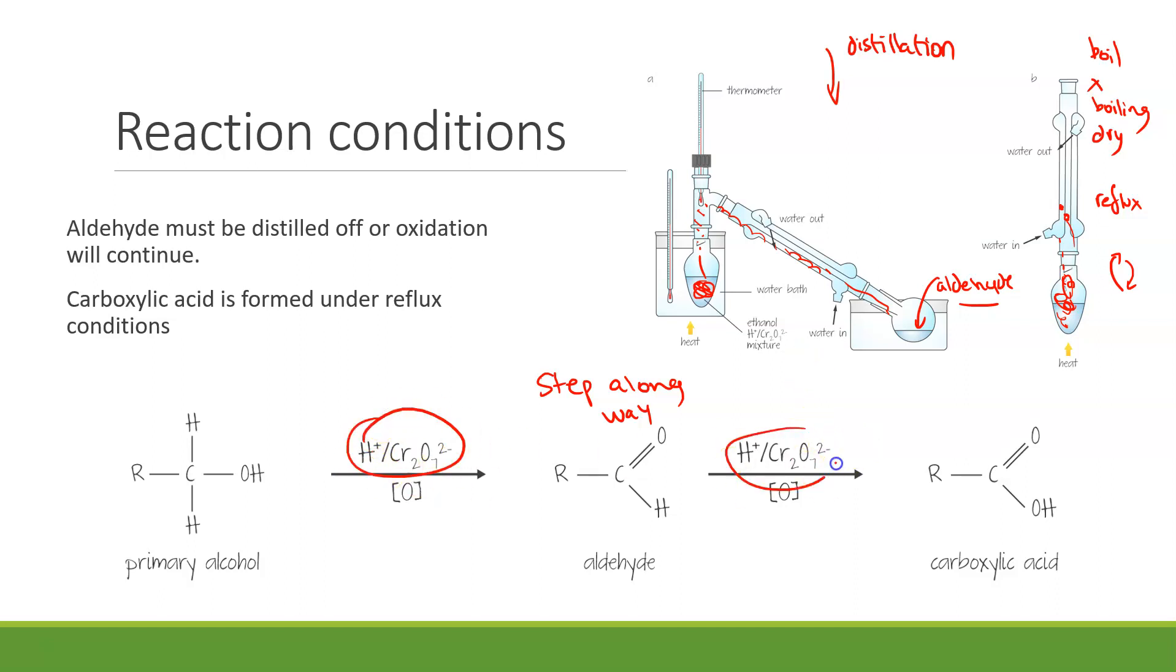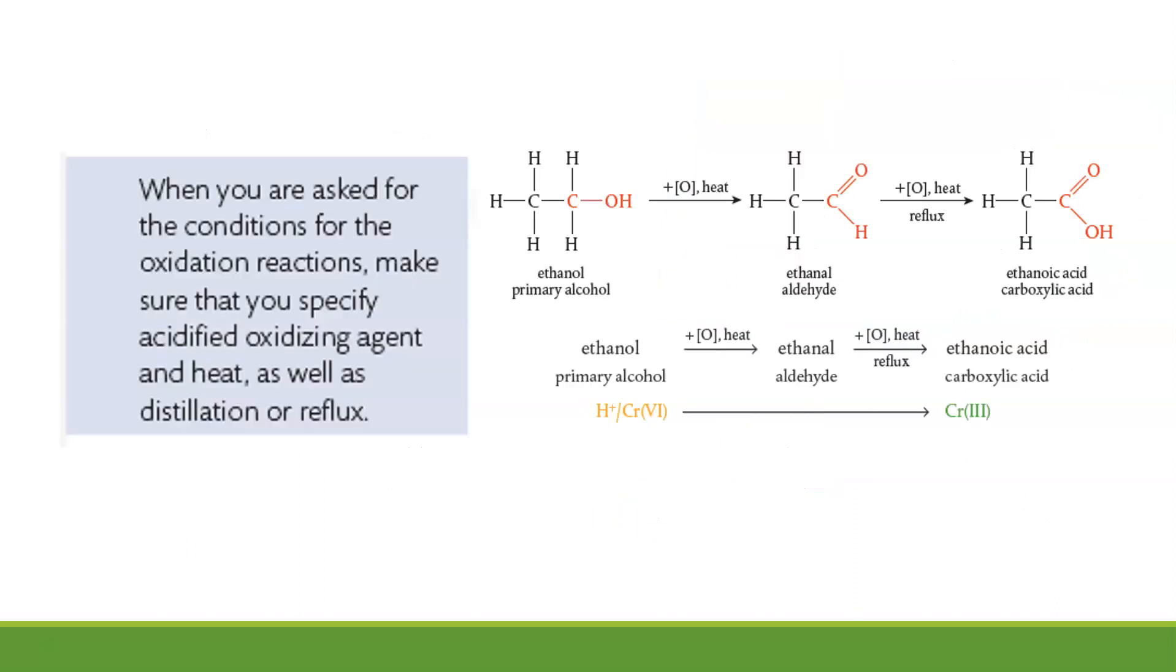The reagents for this is both going to be the same. It's acidified dichromate or acidified permanganate. When you're asked for the conditions for the oxidation reactions, you need to specify the acidified oxidizing agent. So it has to be under acid conditions, because remember, we don't do basic conditions in VCE. So it will be H+ and MnO4^- or H+ Cr2O7^2-. This is acidified permanganate and acidified dichromate.